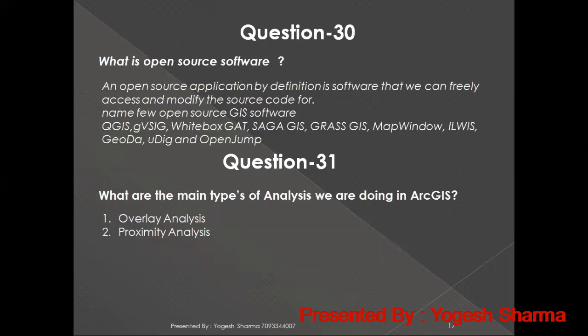What is open source software? By definition, open source software is software that we can freely access and modify the source code. There are several open source GIS software options available. The most common one is QGIS — Quantum GIS — and most companies are using QGIS as their open source GIS software.